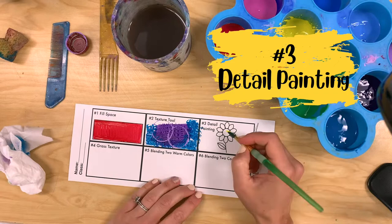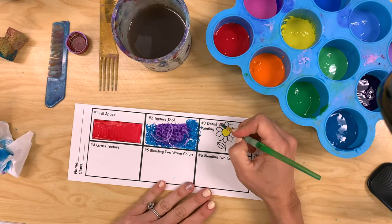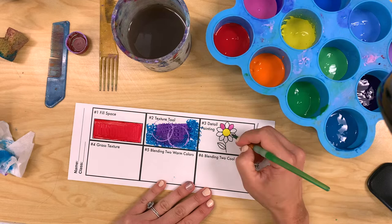Our next technique is detail painting. In detail painting it's very important to only get a small amount of paint on your brush. Just the little tip of the brush should go into the paint.